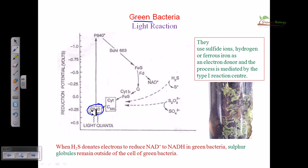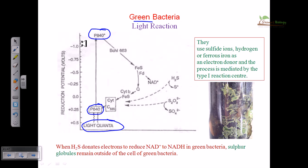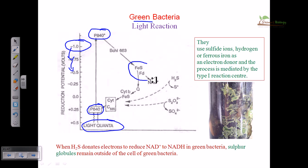Light quanta will excite P840, which is an antenna pigment. It can change its conformation and shift electrons from a lower energy state to a higher energy state by gathering energy from light quanta. From this higher energetic state, where we have the highest electronegative reduction potential, the electron transfers from one carrier to another - from bacteriochlorophyll to another protein molecule.